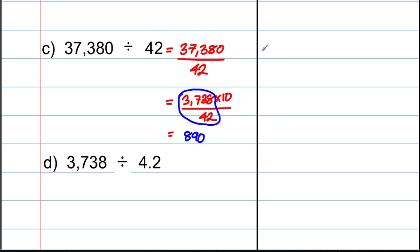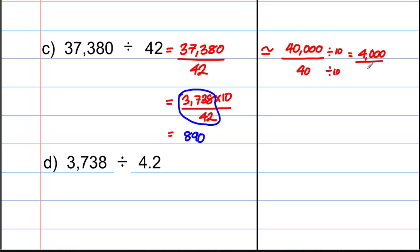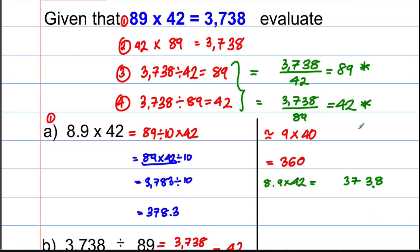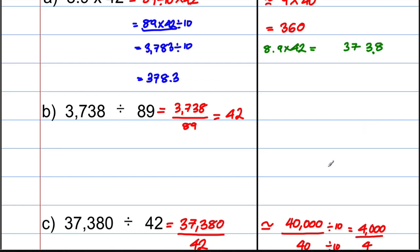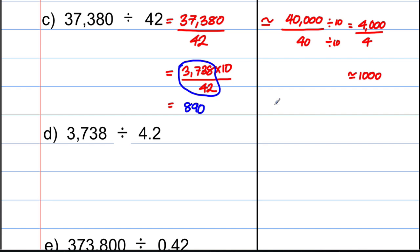Checking by approximation: rounding 37380 divided by 42 to one significant figure gives approximately 40,000 over 40. Dividing top and bottom by 10 simplifies to 4,000 divided by 4, which is approximately 1,000. So the answer has the digits 89 in it and must be as close to 1,000 as possible — confirming the answer is 890.